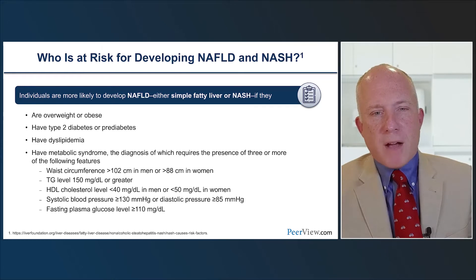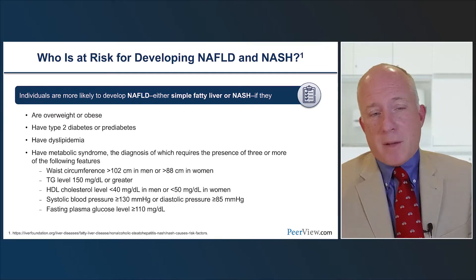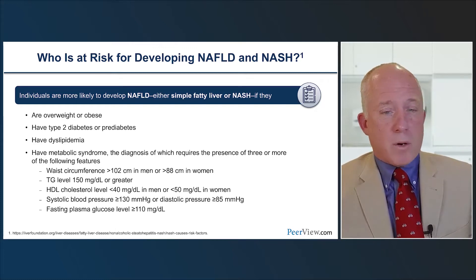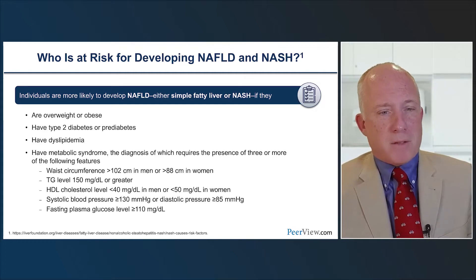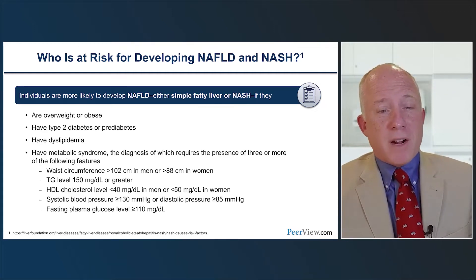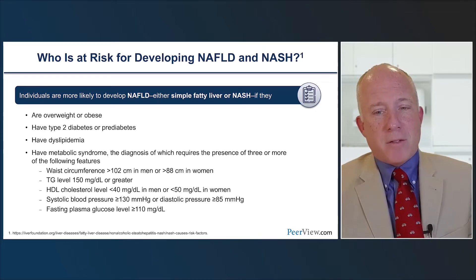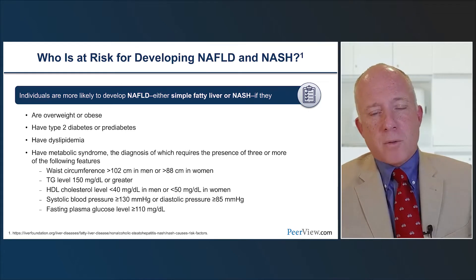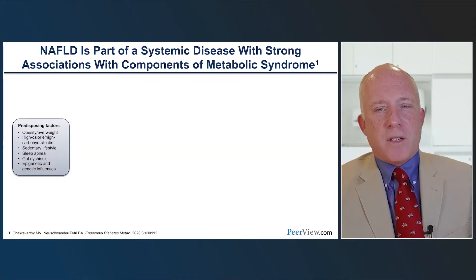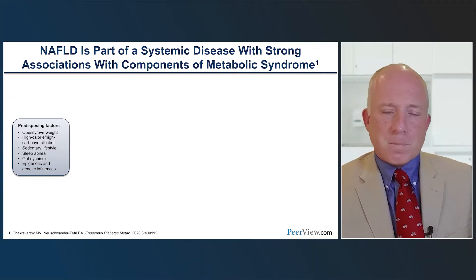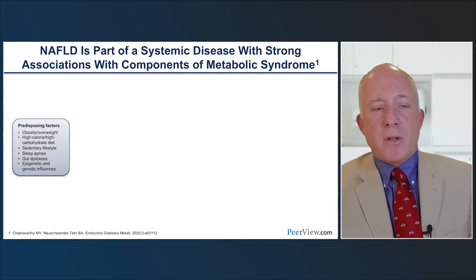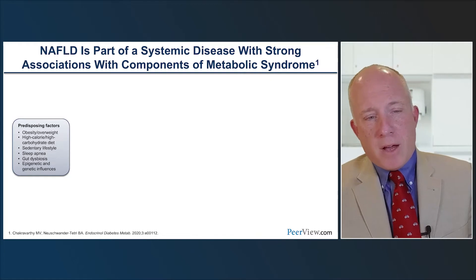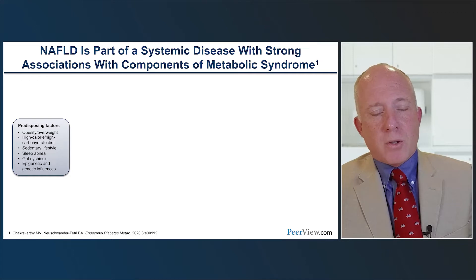NAFLD and NASH risk factors mirror those of type 2 diabetes — this is a metabolic condition. Many at-risk patients will be overweight or obese, particularly with truncal obesity consistent with metabolic syndrome. People with type 2 diabetes or prediabetes are at significantly increased risk, and they often have diabetic dyslipidemia — high triglycerides and low HDL. These metabolic syndrome features help us identify who should be screened for NAFLD and NASH.